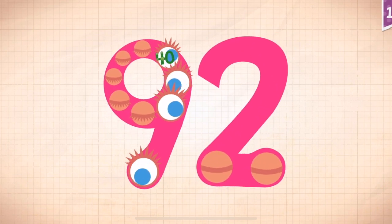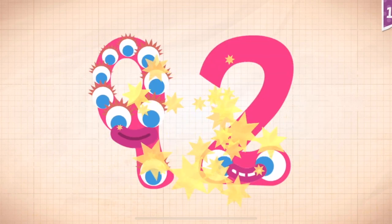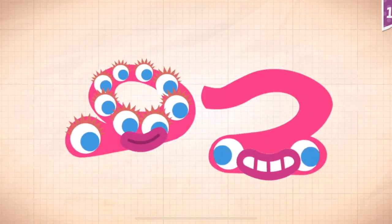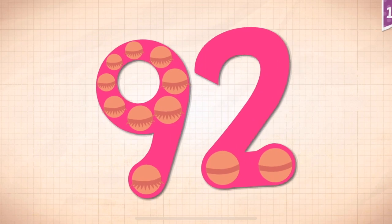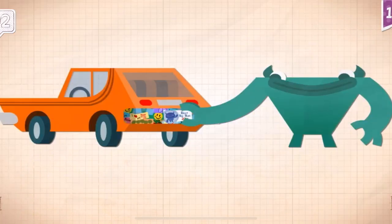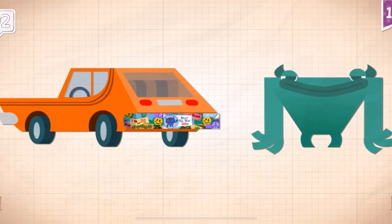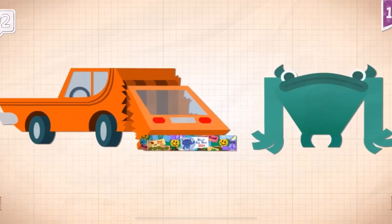Touch the monster's eyes to wake it up. 10, 20, 30, 40, 50, 60, 70, 80, 90, 91, 92. 92, 92, 92. Grack put 92 stickers on the bumper of his car.